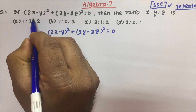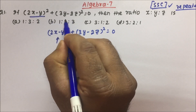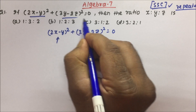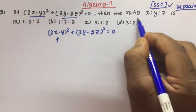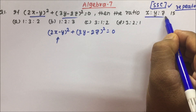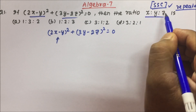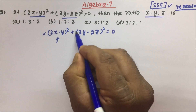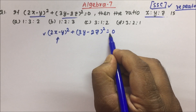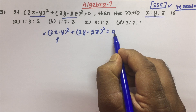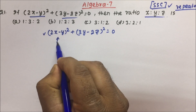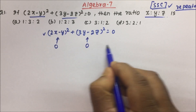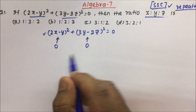Now, what they are asking: if (2x − y)² + (3y − 2z)² = 0, then find the ratio x : y : z. So (2x − y)² + (3y − 2z)² = 0. That means both the terms should be equal to 0, then only 0 + 0 will be equal to 0.